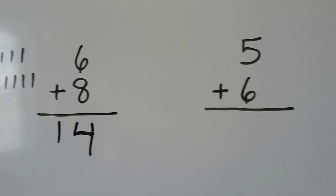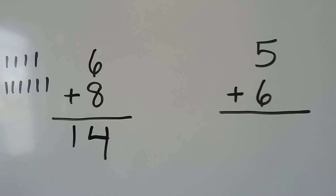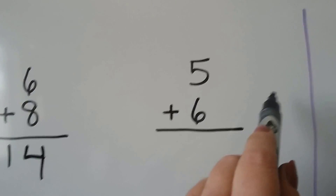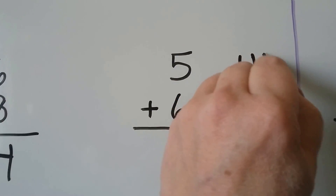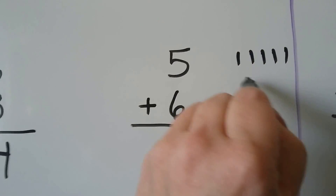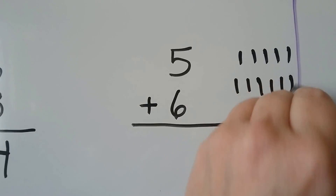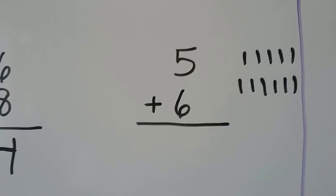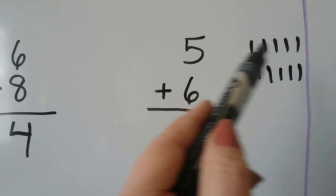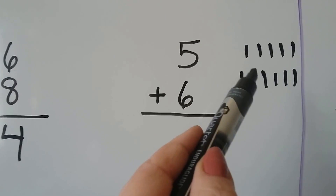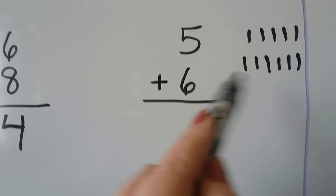5 plus 6. We can make counters: 1, 2, 3, 4, 5, 6. We can count the counters: 5, 6, 7, 8, 9, 10, 11.